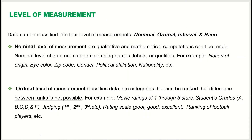Now that we know variables as qualitative and quantitative — with quantitative further divided into discrete and continuous — we are going to classify variables based on the level of measurement. There are four levels of measurement: nominal, ordinal, interval, and ratio.